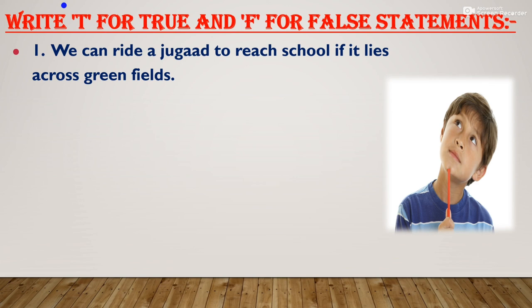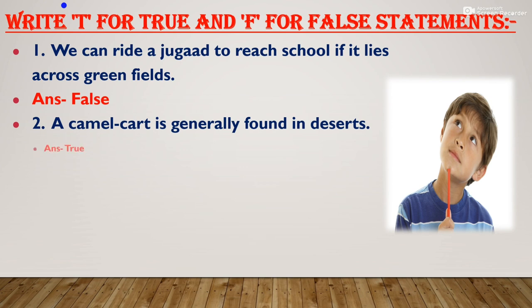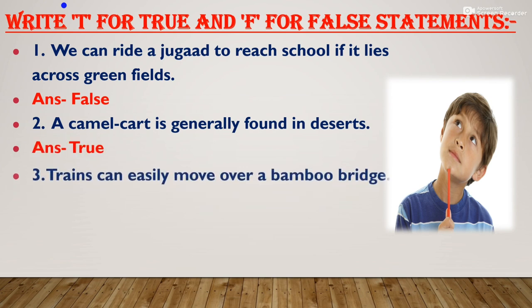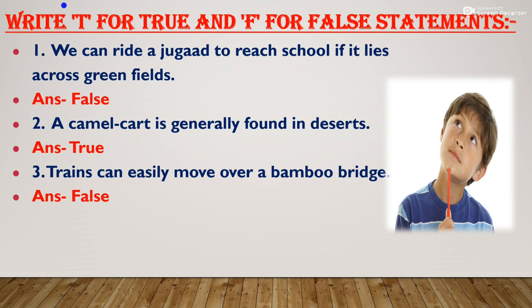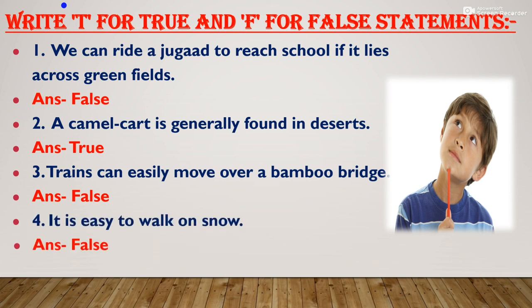Now we will write true and false statements. You use a jugad to reach school if it lies across green fields — False; the correct answer is bullock cart. A camel cart is generally found in the desert — True. Trains can easily move over a bamboo bridge — False; trains cannot move over a bamboo bridge. It is easy to walk on snow — False; if the snow is soft our feet sink into it, and if the snow is frozen we may slip and fall.